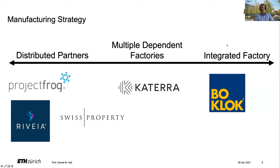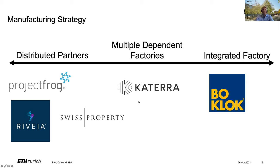On the far right you have the integrated factory. Poklu gave us an example of their factory where they do everything inside, holding all processes to complete the modules from A to Z. Somewhere in the middle is Katerra, which we'll talk about in two weeks. They have a setup with multiple dependent factories — some do certain parts and modules, some do cabinetry, some do wall panels — so multiple dependent factories that have to come together. That's a little bit in between the distributed partners and integrated factory approaches.